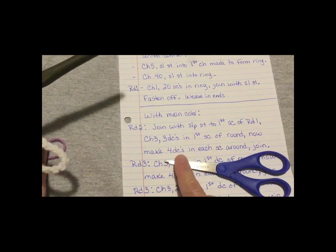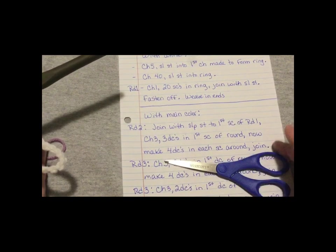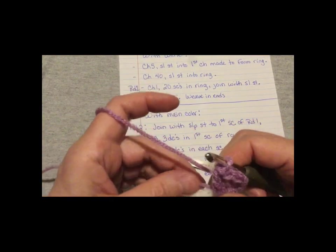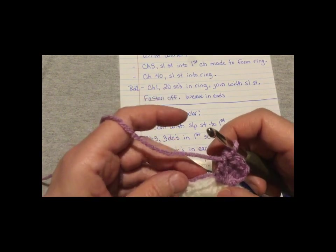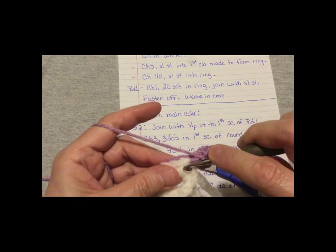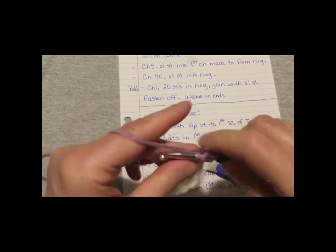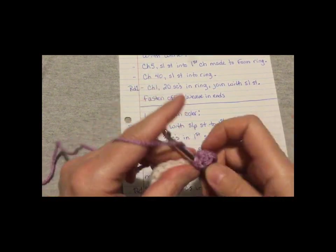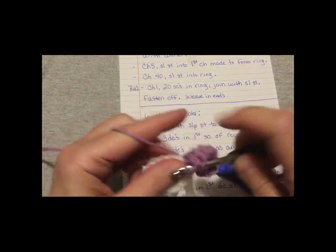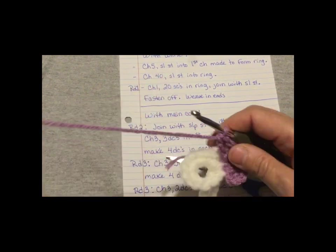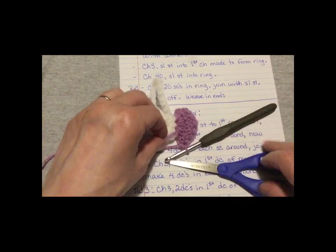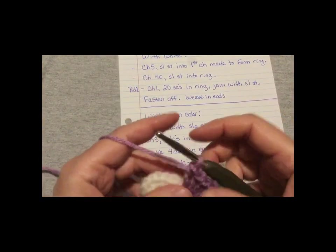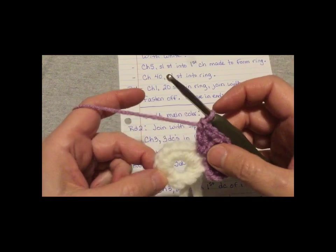Next it says make four double crochets in each single crochet around. And I work over my tail like I said before. You don't have to if it gets complicated for you and in the way. Here's the next single crochet, and we're going to do one, two, three, four. I think at this point I can trim the tail off. And you're going to do that in each single crochet around.